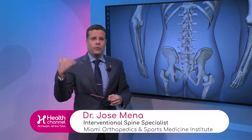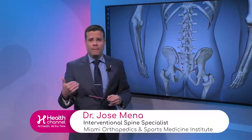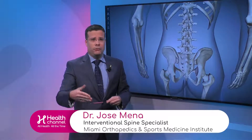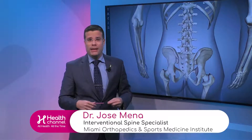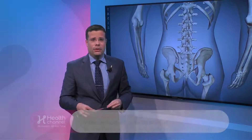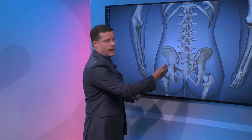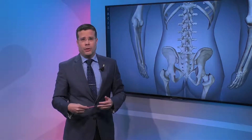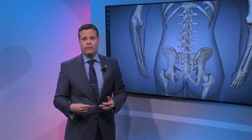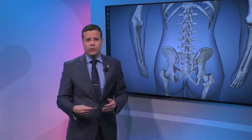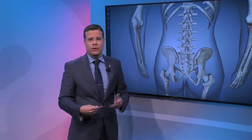Typically what we want to exclude are other conditions that might mimic the sacroiliac joint condition, so we might go ahead and institute treatment. Keep in mind that the way we actually diagnose the condition is by putting an injection under x-ray guidance into that joint, and the patient getting almost a hundred percent relief of symptoms immediately. That's what we call the gold standard of diagnosing this condition.